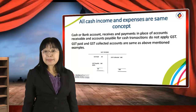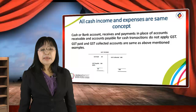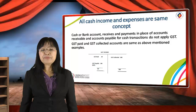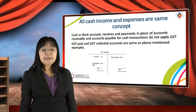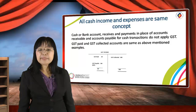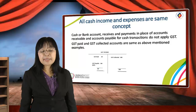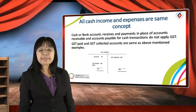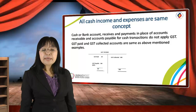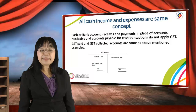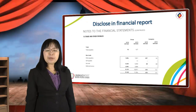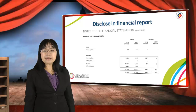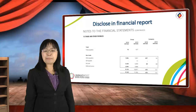All cash income and expense transactions follow the same concept as previously discussed. For cash transactions, use the cash or bank account in place of accounts receivable and accounts payable — GST does not change. The GST paid account and GST collected account work the same as above. When combined in the GST payable account, GST paid appears on the debit side and GST collected appears on the credit side. The net difference is the GST payable to the tax authority. GST payable will be reported in the annual report under the notes to the financial statements.